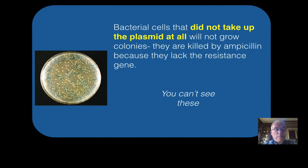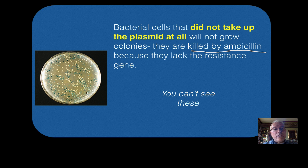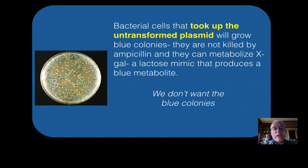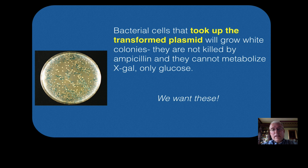Let's pull all this information together. Bacterial cells that did not take up any plasmid at all are not going to grow because they'll be killed by the ampicillin — they won't appear as visible colonies. The bacterial colonies that grow blue are millions of bacteria cloning themselves from an original cell that took up a plasmid, but that plasmid was not transformed — it does not contain the gene of interest and has a completely functional LAC-Z gene, so these bacteria metabolize galactose and turn blue. We don't want those. The colonies that took up the transformed plasmid are going to grow white, and those are the ones we want.